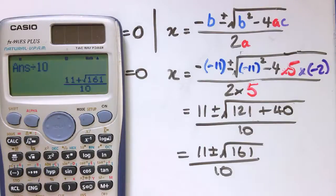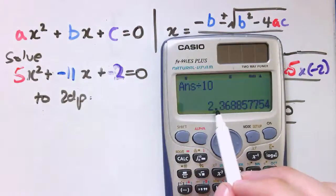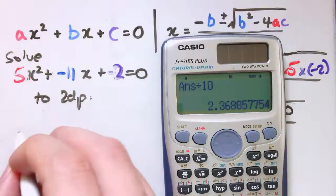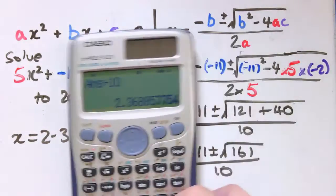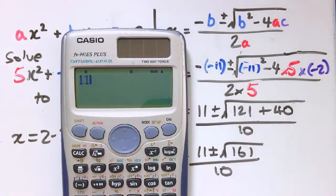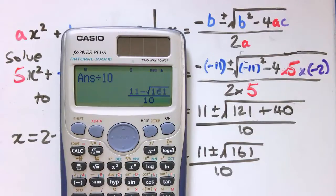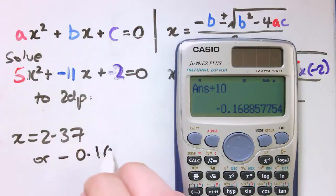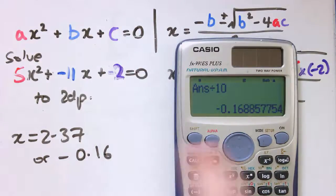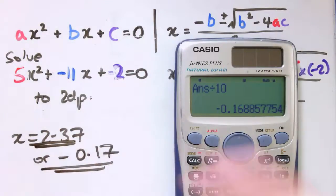Forgetting for now that I've got the calculator that will just solve this anyway, we've got 11 plus the square root of 161. I need to divide that by 10. We can press this S to D button here to turn that into a decimal and I'll round it off to two DPs. That would be 2.37. And the other answer here was 11 minus the square root of 161, divide it by 10 and turn it into a decimal. So we get minus 0.17, and there are my two answers.